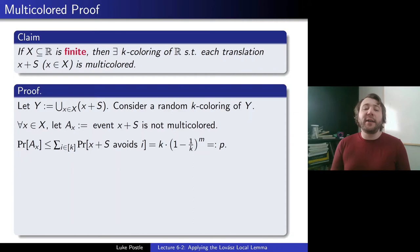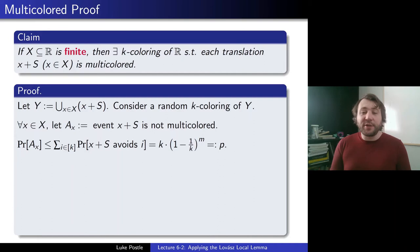So by union bound, the probability of Ax is at most the sum over i in [k] of the probability that x + S avoids color i. If it avoids color i, each of the m numbers in the translation would get one of the other k−1 colors, giving (1 − 1/k)^m, times k because there are k terms. We define that to be p. So the probability of Ax is at most p = k·(1 − 1/k)^m, which appeared in the inequality from the theorem.